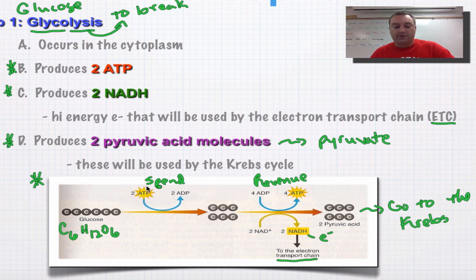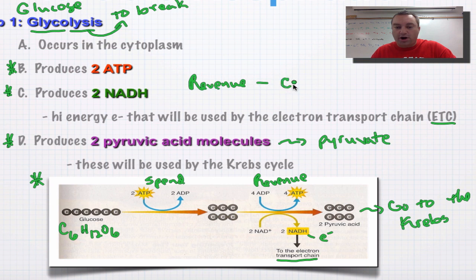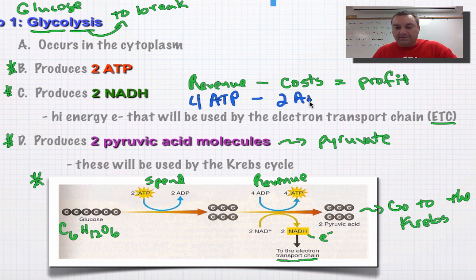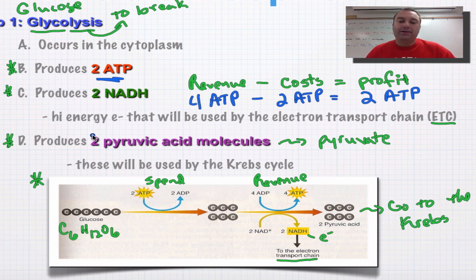So let's go back here to spending and then getting some revenue. If we take our revenue — just business terms again — and subtract our costs or overhead, that's going to equal your profit, sometimes referred to as net income. Our revenue was four ATP. Subtracting our overhead cost of two ATP. So our profit would be two ATP molecules — we have a net gain of two ATP. And that's where this number comes from. This will end our episode on glycolysis.